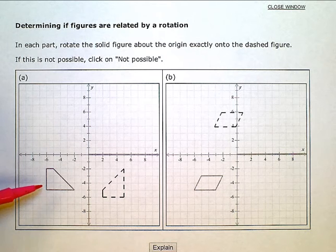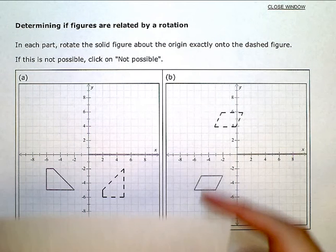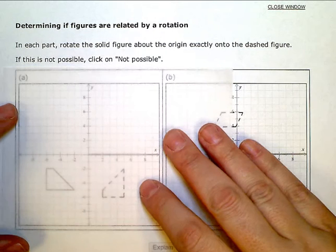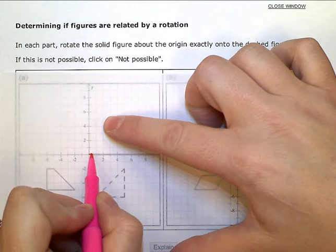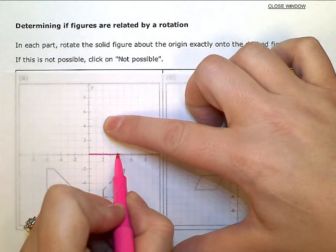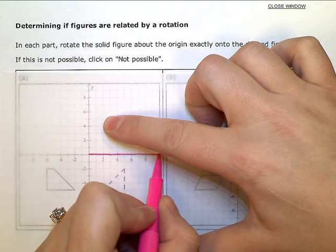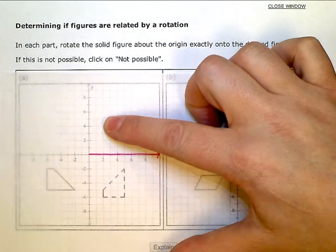So what I'm going to do here - when you're on the computer in ALEKS, you can actually grab this bar right here, the x-axis that they have darkened, and swing it around and rotate it.